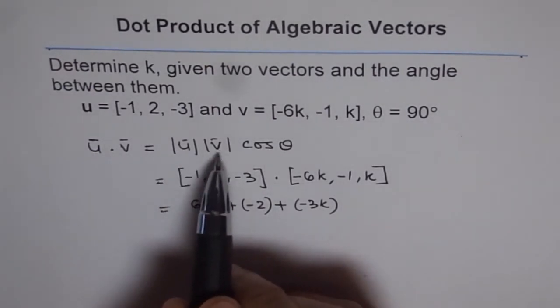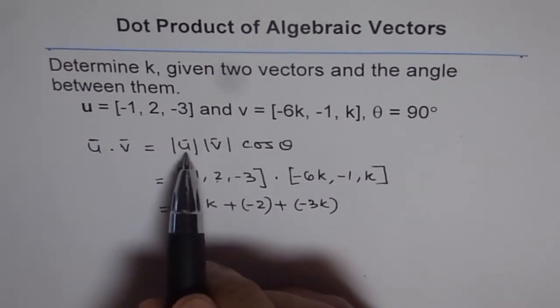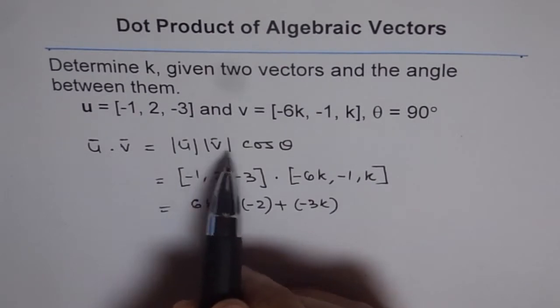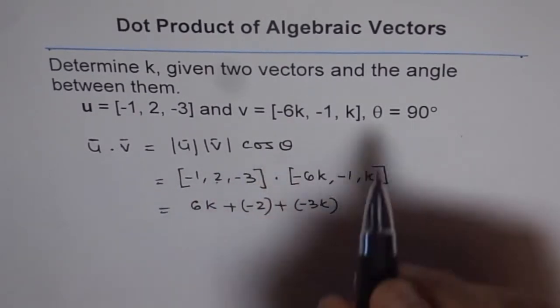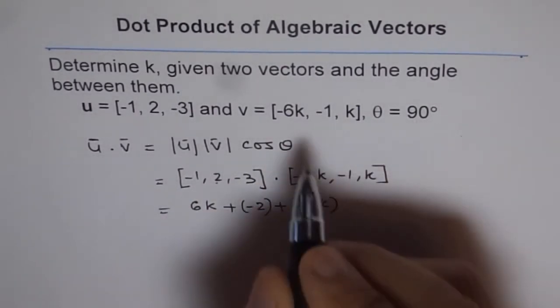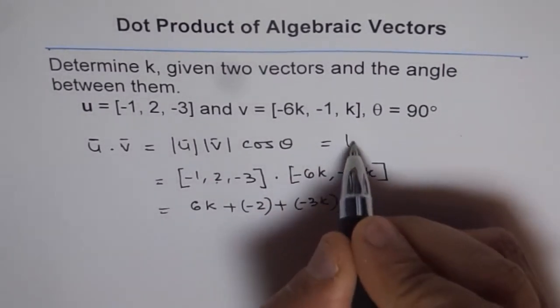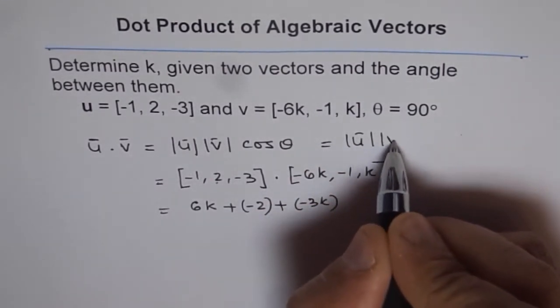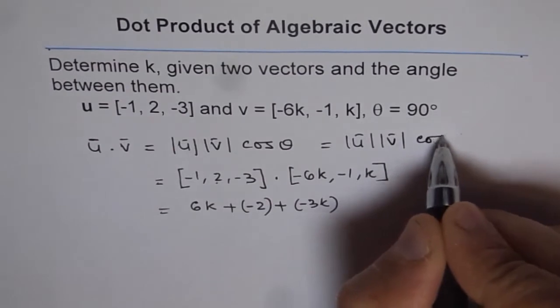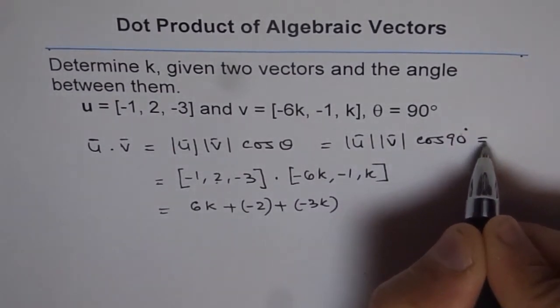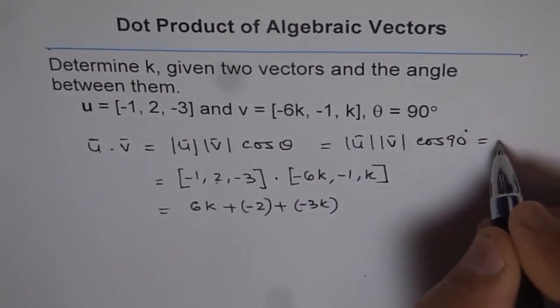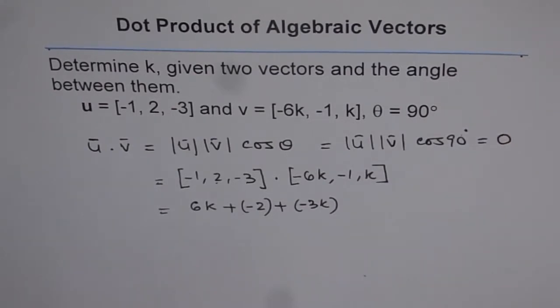You can also find the dot product using |u||v| cos θ. Since theta is 90 degrees, this is |u||v| cos 90°. Since cos 90° = 0, we get 0.